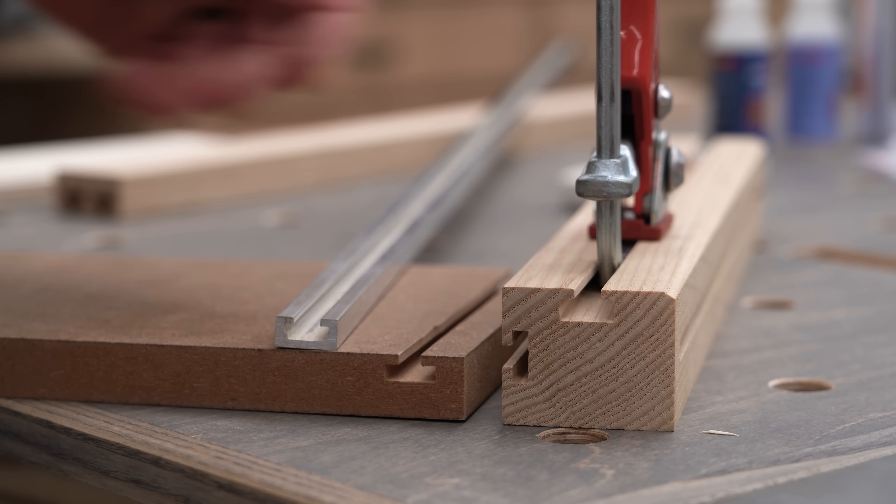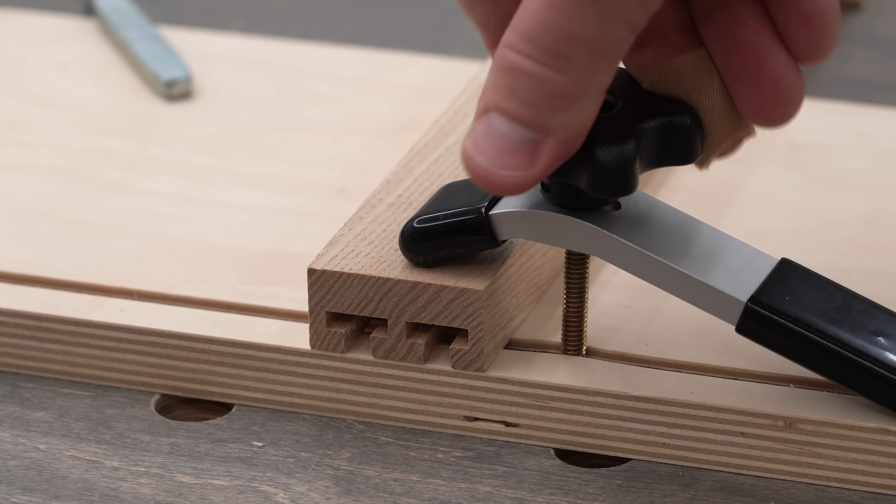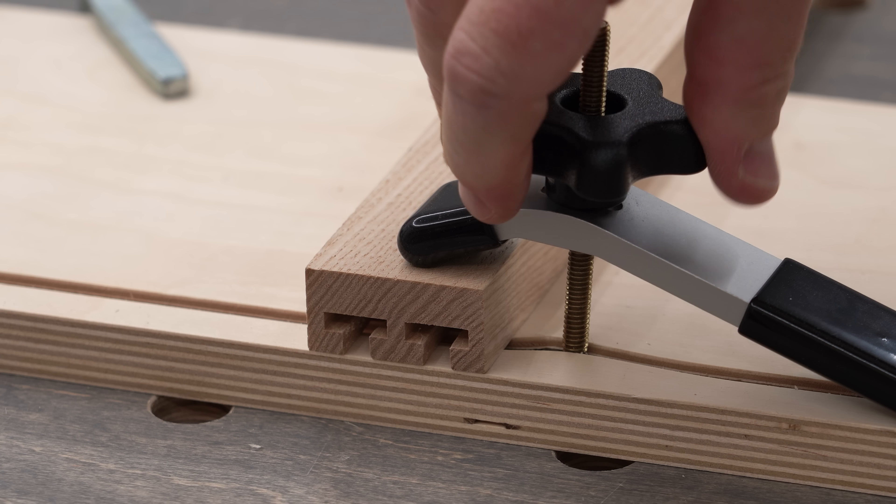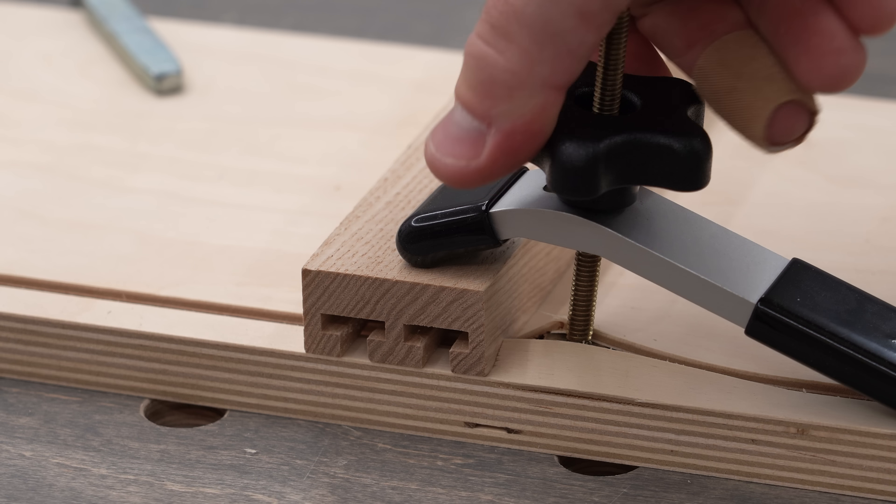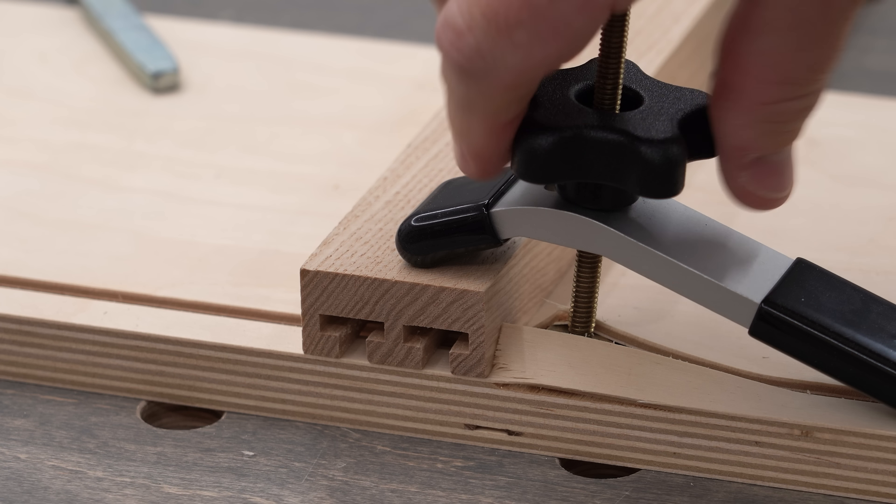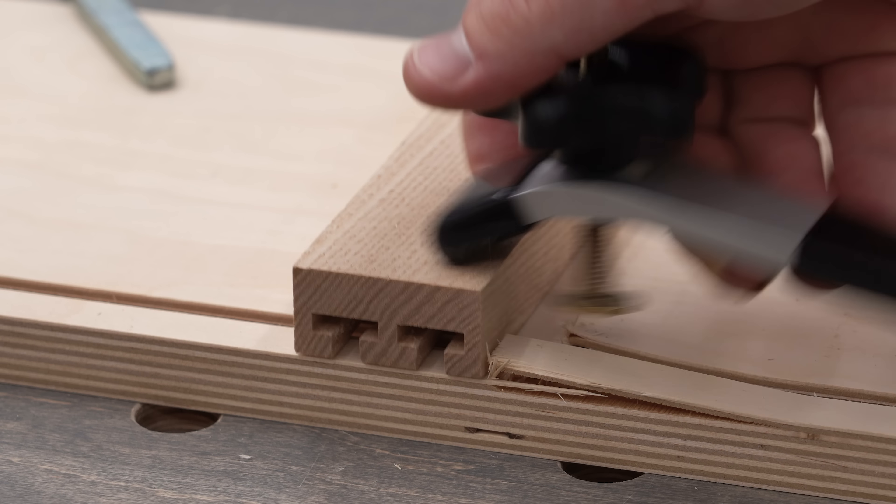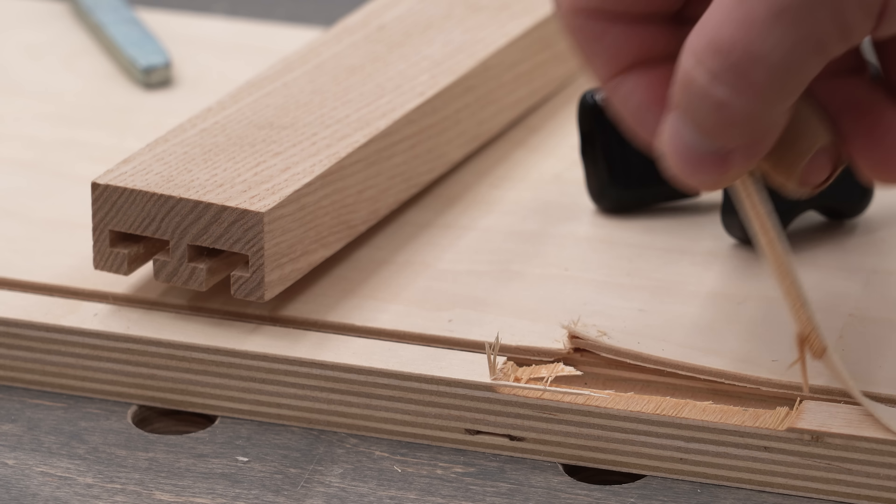But there are two situations where aluminum track can be superior. One situation is clamping. Without downward force being applied to the top of a wood track, it will break apart with too much stress as the knob pulls the T-bolt right up through the top of the track.